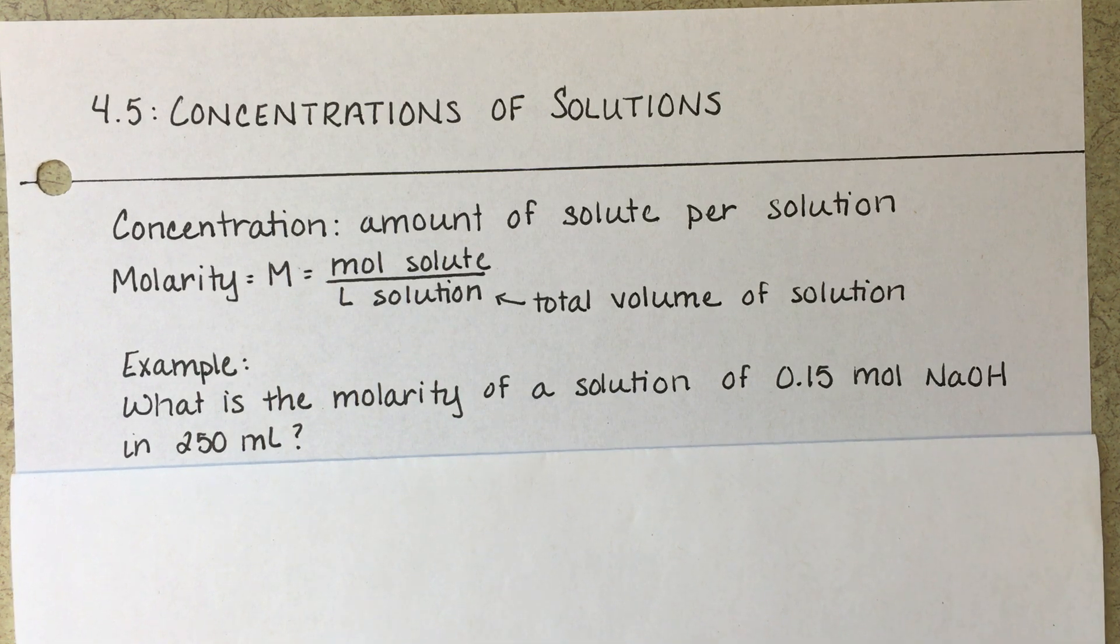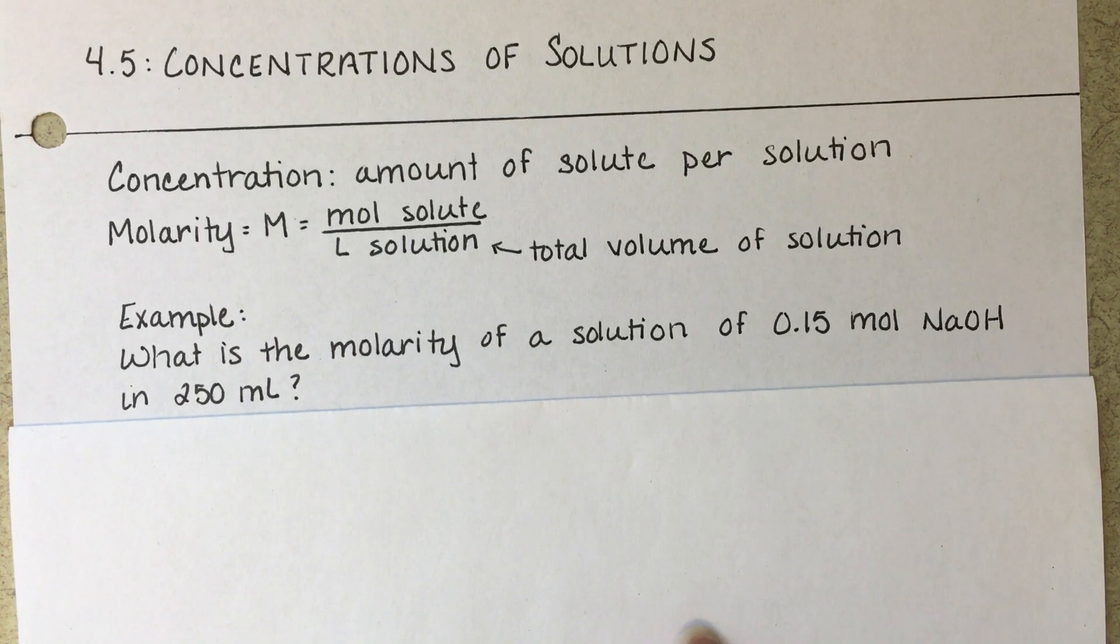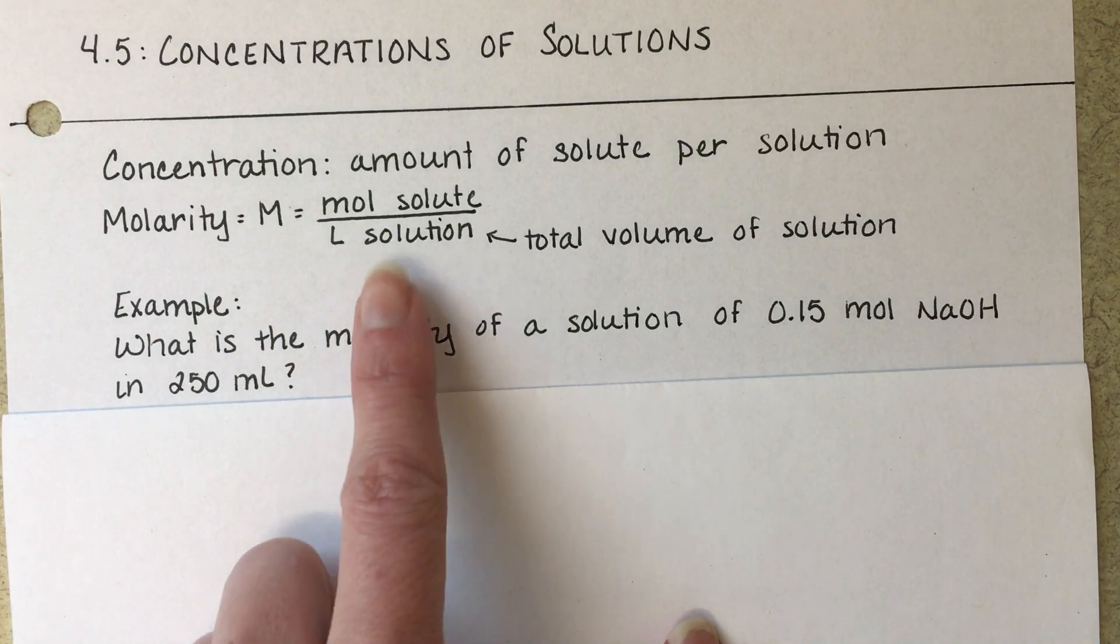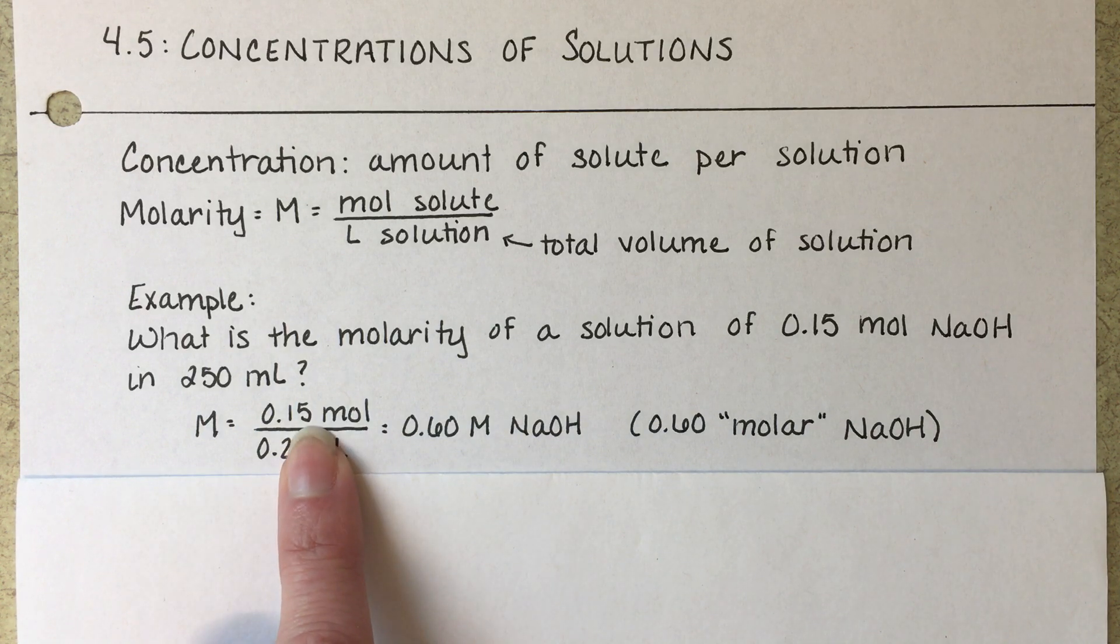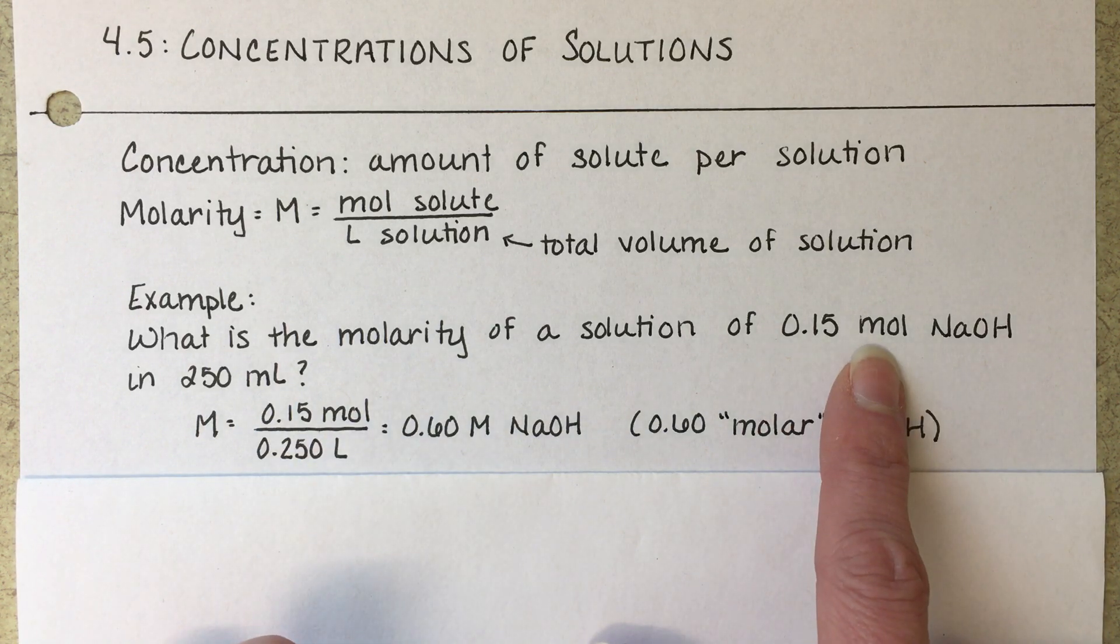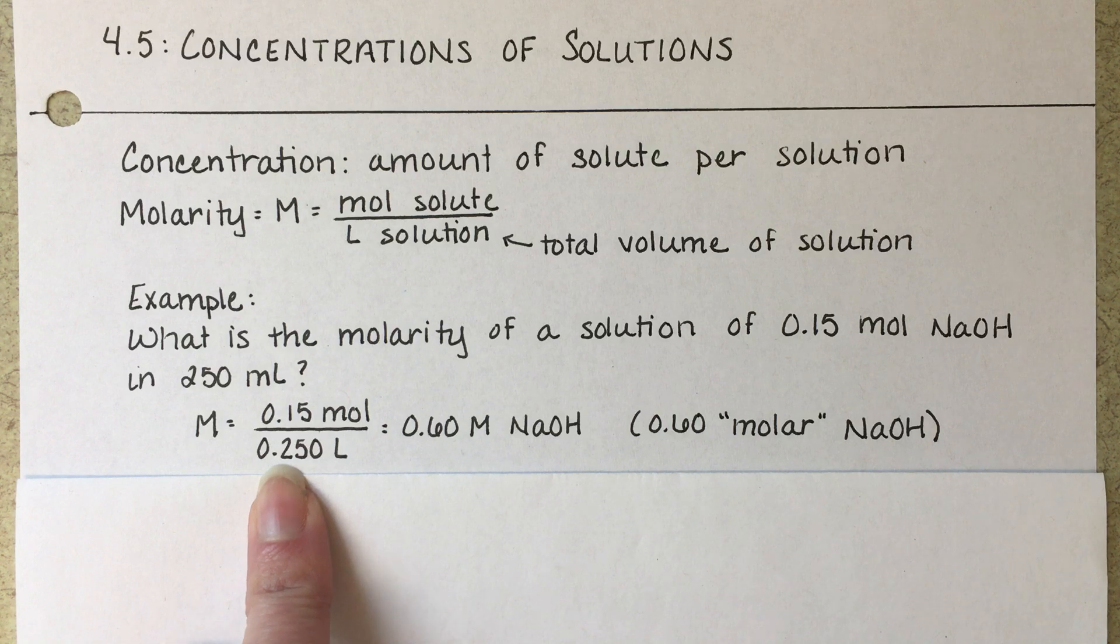To calculate this molarity, all that we have to do is plug the moles and the volume into the molarity equation. So here we have 0.15 moles of our solute, NaOH, in 0.250 liters of solution.